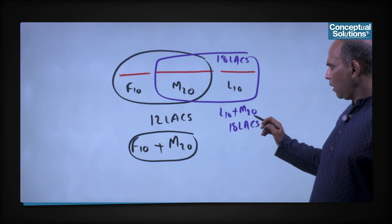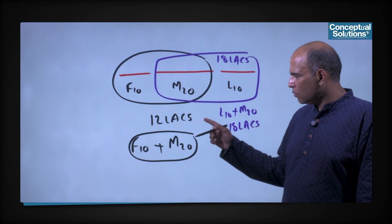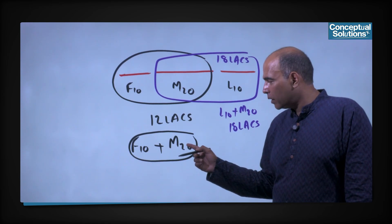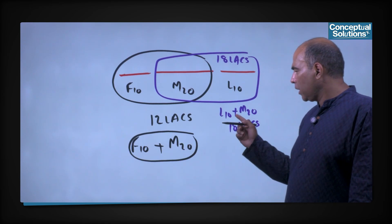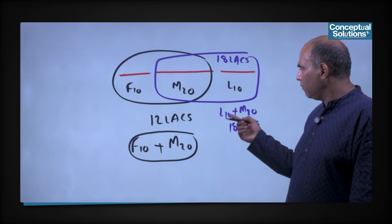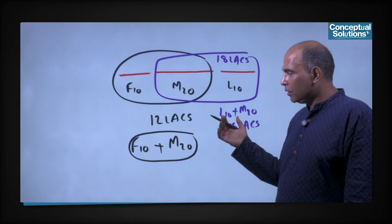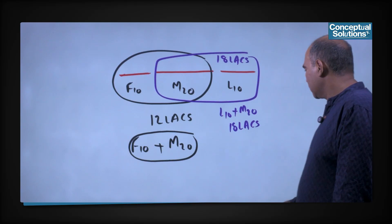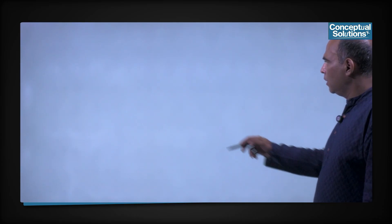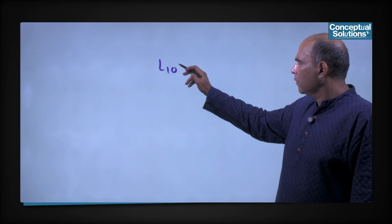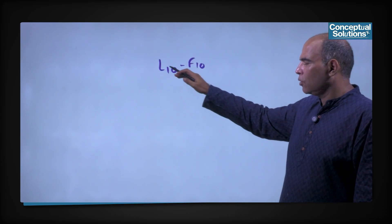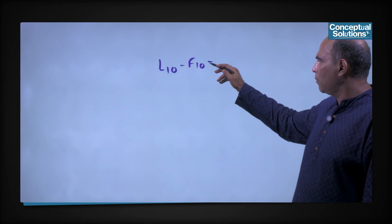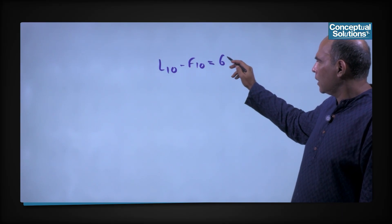Now if I subtract the first equation from the second — since M20 appears in both — I get an equation: L10 minus F10 = 6 lakhs. So the total bonus of the last 10 employees minus the total bonus of the first 10 employees equals 6 lakhs.